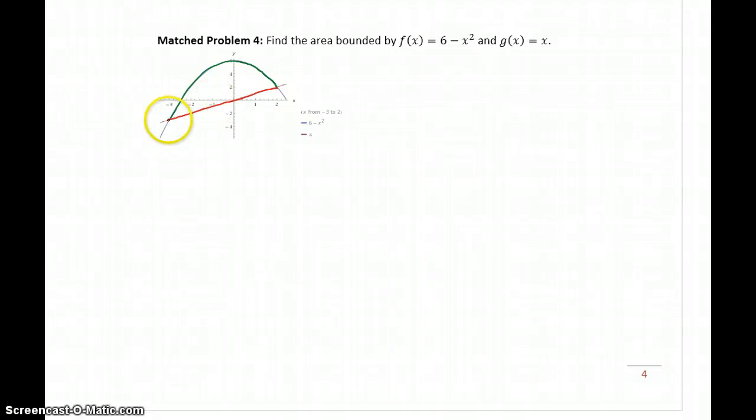When we plot these two graphs, we have kind of a half-circle-ish sort of shape that's enclosed by those two graphs.